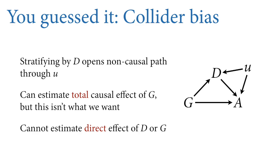This is a case of collider bias. When we stratify on D in model 2, this opens a non-causal path through the unobserved confound U. D is a collider on the path from G to D to U. We can estimate the total causal effect of G because when we run model 1, we don't stratify by D, so we don't open the confounding path through U. Yes, the causal relationship between D — choice of department — and admissions is always confounded by the unobserved confound. But that's not our estimate. We can still estimate the total causal effect of G even though the relationship between D and A is confounded. But when we try to stratify by D, we turn on a confound by accident.